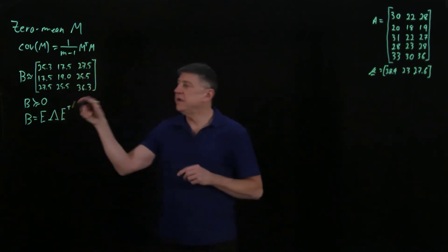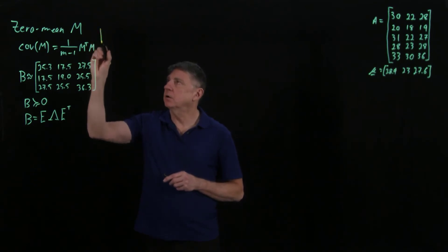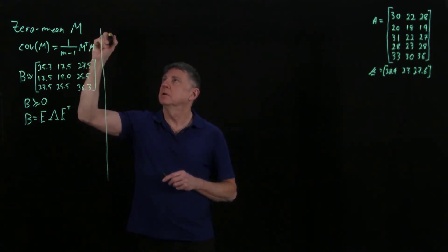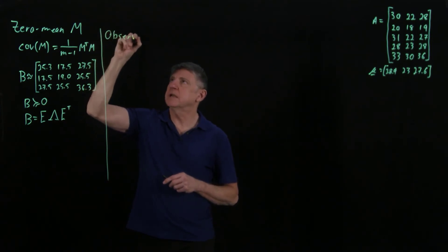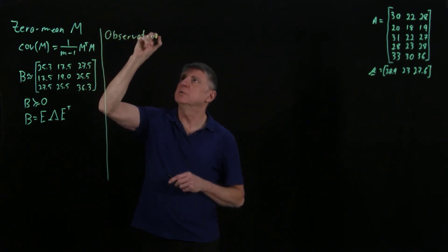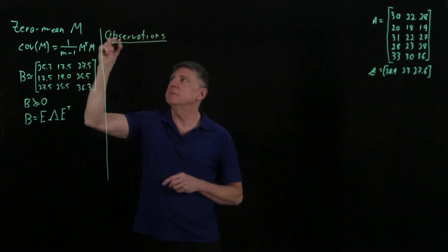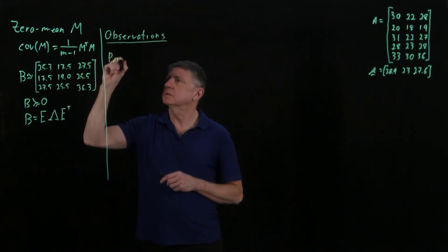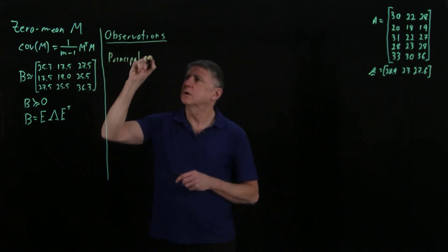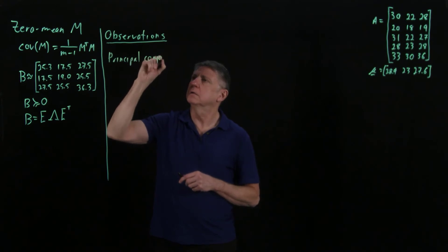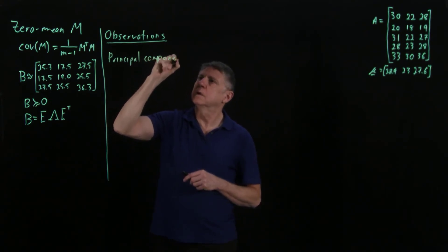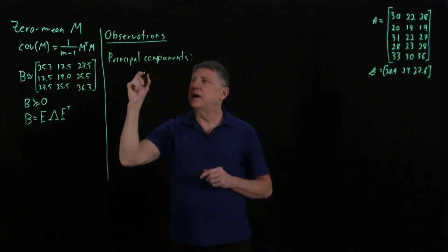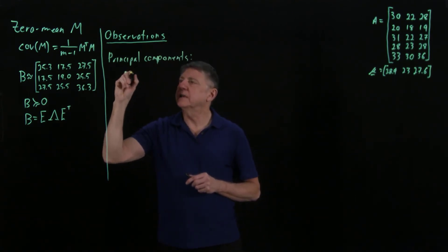When we have that information - these are the definitions, which you can find in many resources - let's call these observations. The principal components are the eigenvectors of this symmetric positive semi-definite covariance.